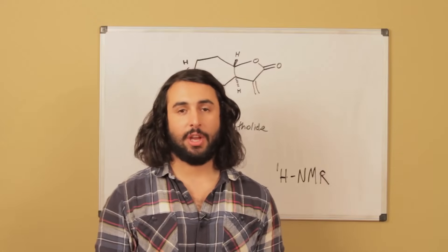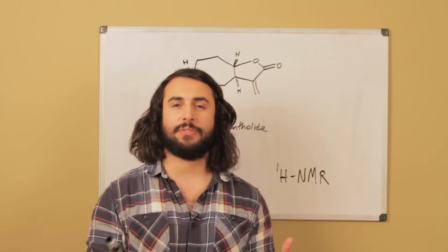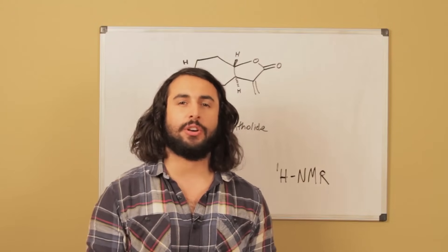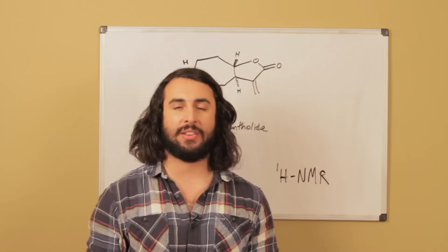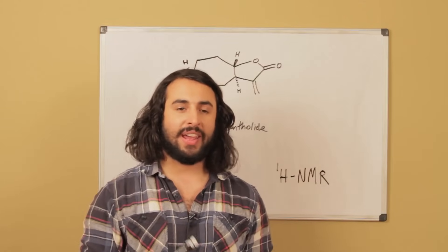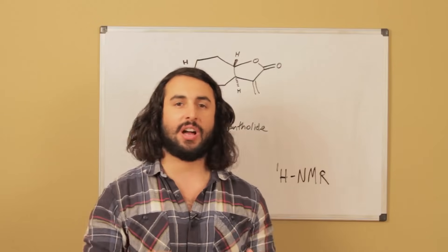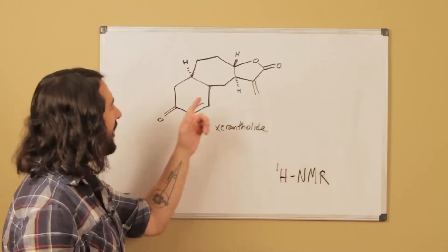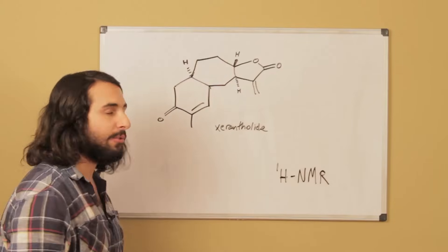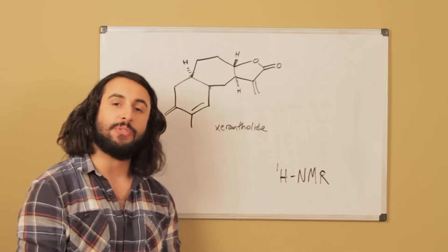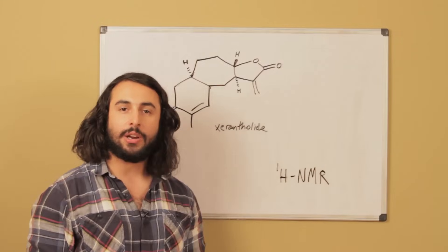We looked at IR spectroscopy, which is the study of the interaction of light and matter, and we can use that to identify what functional groups might be on a molecule. But that's not going to be good enough, because in modern synthetic chemistry, when we do a multi-step synthesis, we have to be sure at every step — and especially on our final product — that we know exactly what molecule we have: all of the connectivity, all of the stereochemistry. If we're going to make something complicated like xeranthylide, we need a spectroscopic technique that can definitively confirm that molecule down to every tiny detail. That method is nuclear magnetic resonance spectroscopy, or NMR spectroscopy.